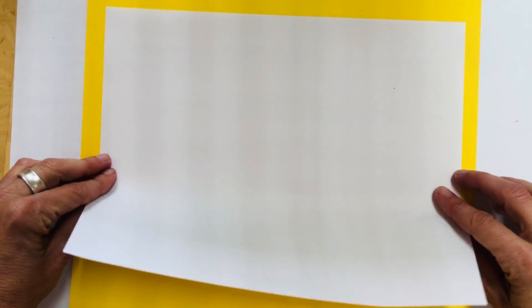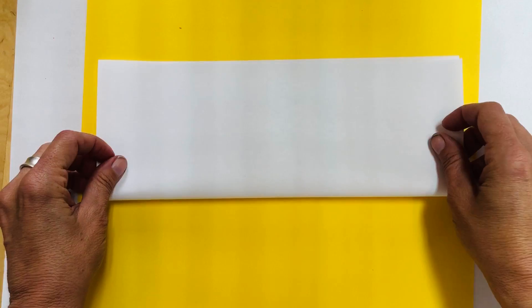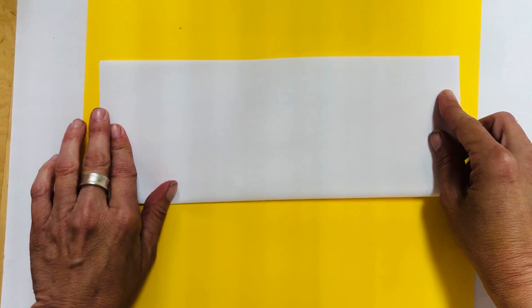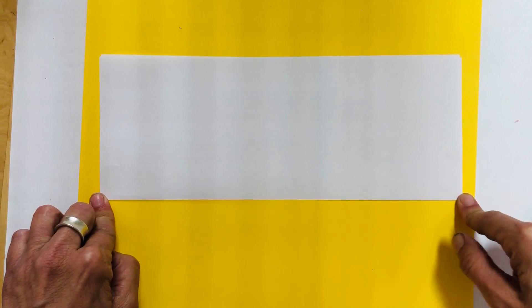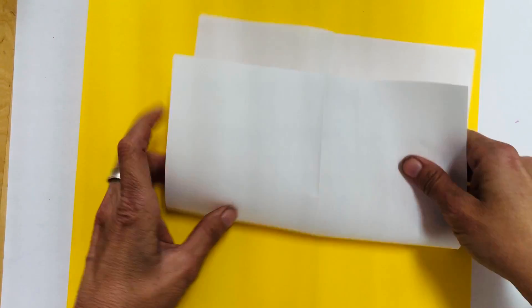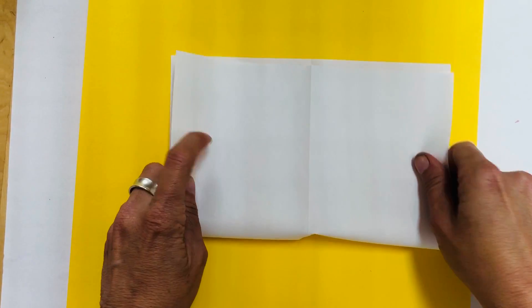But first we have to start folding using some familiar folds that we know. So we're going to start with a hot dog fold like this and you're going to try to crease it as you go and you're going to fold that into a hamburger fold.